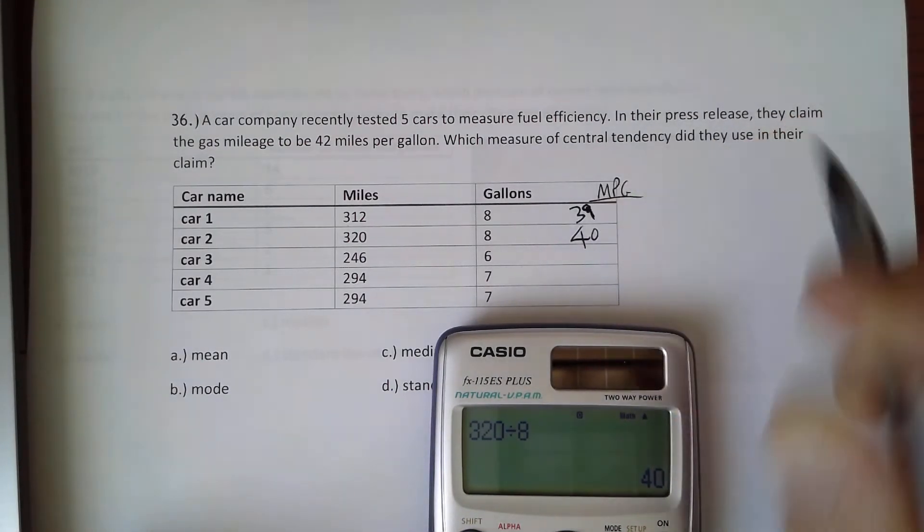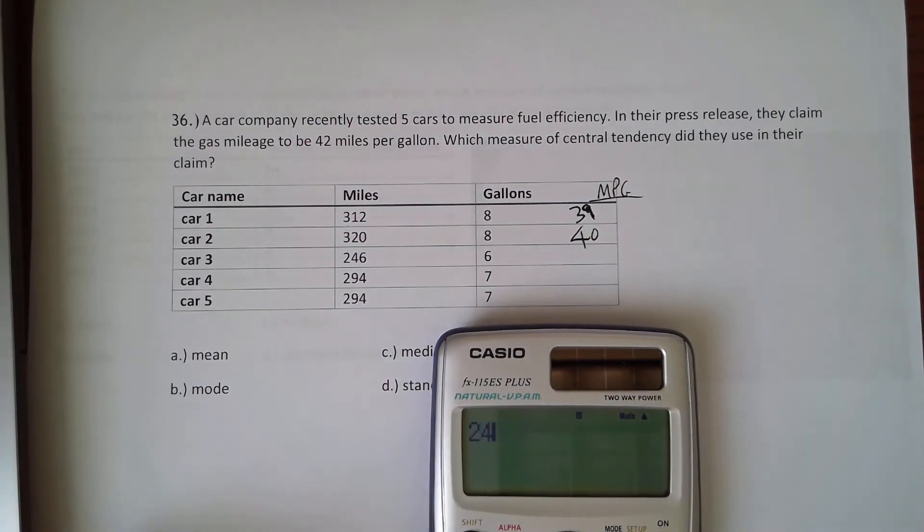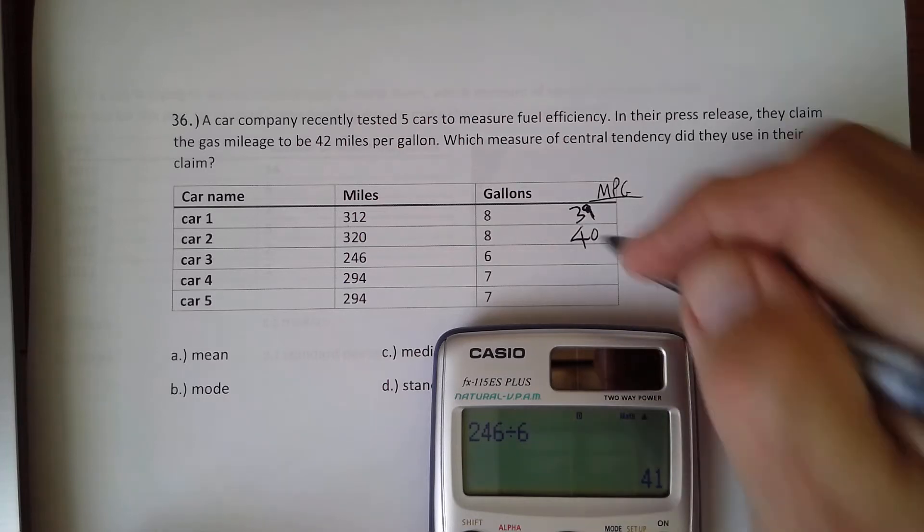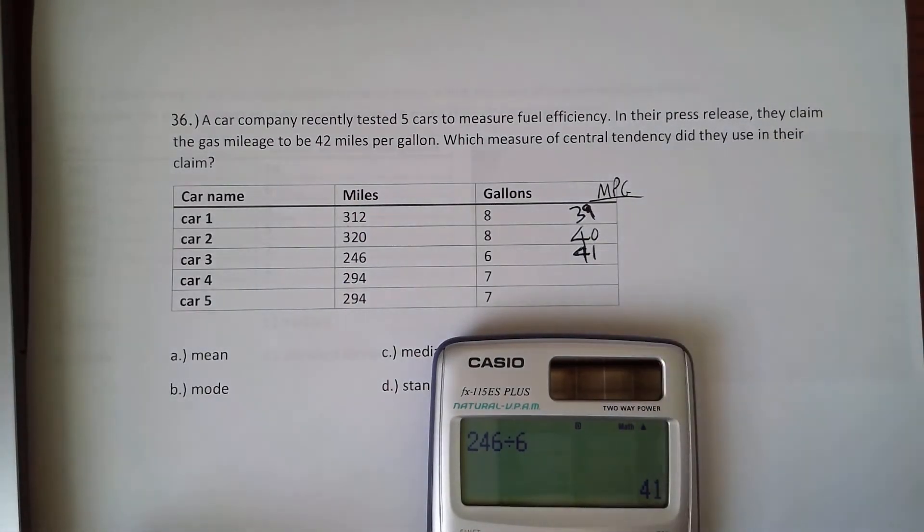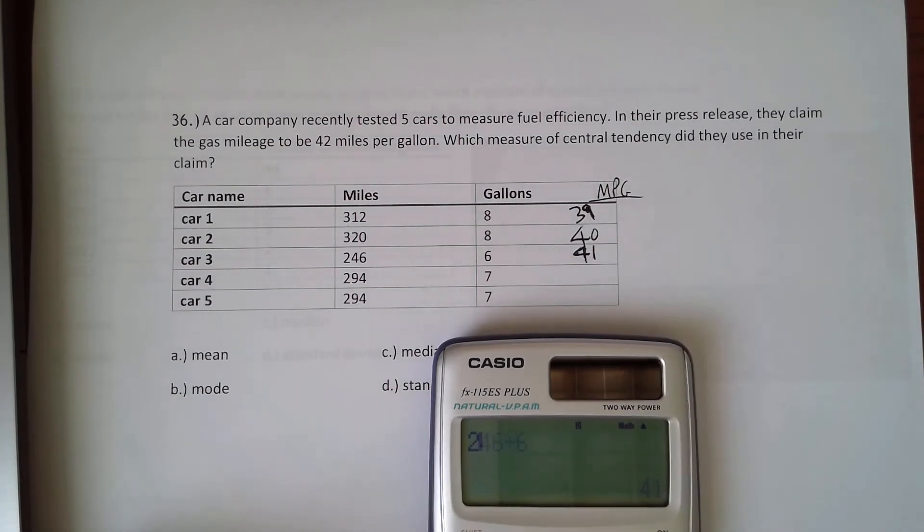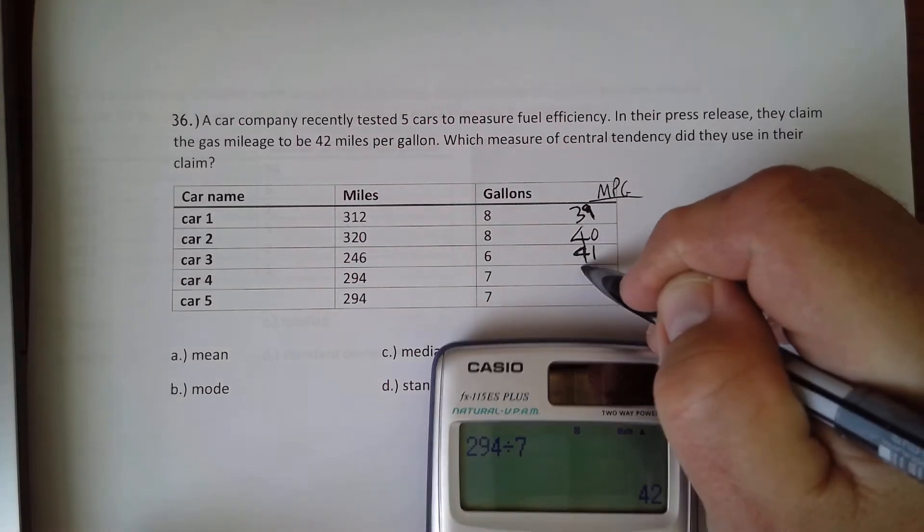And the next one, we have 246 divided by 6 is 41. And the next one is 294 divided by 7 is 42.